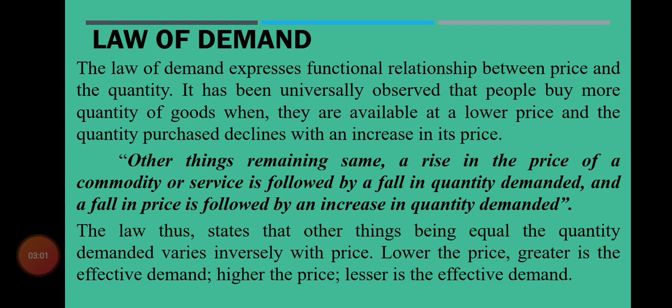Price اور quantity demanded کے درمیان negative relationship ہے۔ بڑھتی ہوئی prices، quantity demanded یعنی مقداری طلب کو کم کر دیتی ہیں، اور کم ہوتی ہوئی prices، quantity demanded کو زیادہ کر دیتی ہیں۔ So this law states that other things being equal, the quantity demanded varies inversely with price — price زیادہ تو quantity demanded کم، price کم تو quantity demanded زیادہ۔ So lower the price, greater is the effective demand; higher the price, lesser is the effective demand.